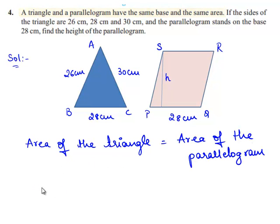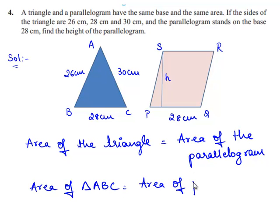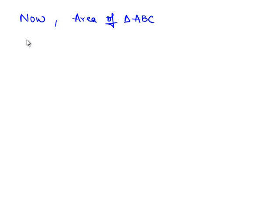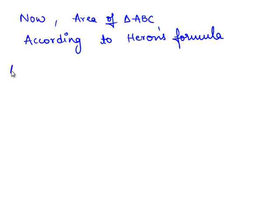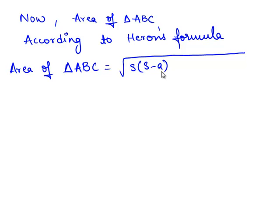So, area of triangle ABC is equal to area of parallelogram PQRS. Now let us find the area of triangle ABC. According to Heron's formula, area of triangle ABC is equal to square root of S times (S minus A) times (S minus B) times (S minus C).